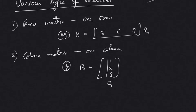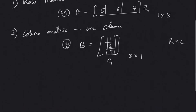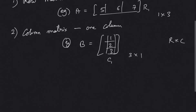Now what will be the order of the first matrix? That will be: number of rows we have 1, number of columns we have 1, 2, and 3 — so it's going to be 1 by 3. For the second matrix, number of rows we have 1, 2, 3 and number of columns 1. We all know rows by columns — always rows first.